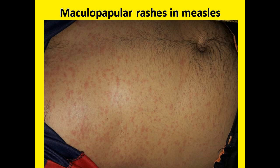You can see in this image the red spots are the maculopapular rashes. If you find these rashes, then look for Koplik's spots. If Koplik's spots are present, then the disease is measles.